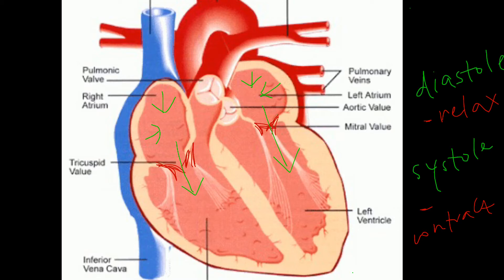It's important to know that when the atrium is contracting — meaning it is undergoing systole — the ventricle is undergoing diastole. So when blood is being pushed out from the atrium, that part of the heart is contracting while the ventricle is relaxing. Once the ventricles are filled to a certain capacity, the ventricles contract to push the blood out into the arteries. Without the valves, there would be backflow of blood back into the atrium.